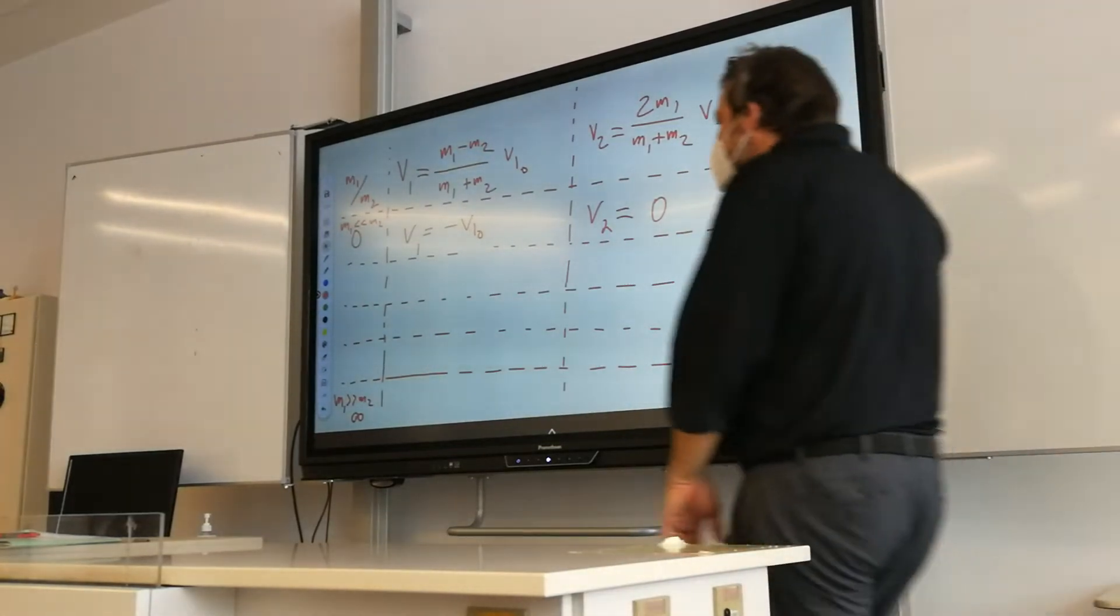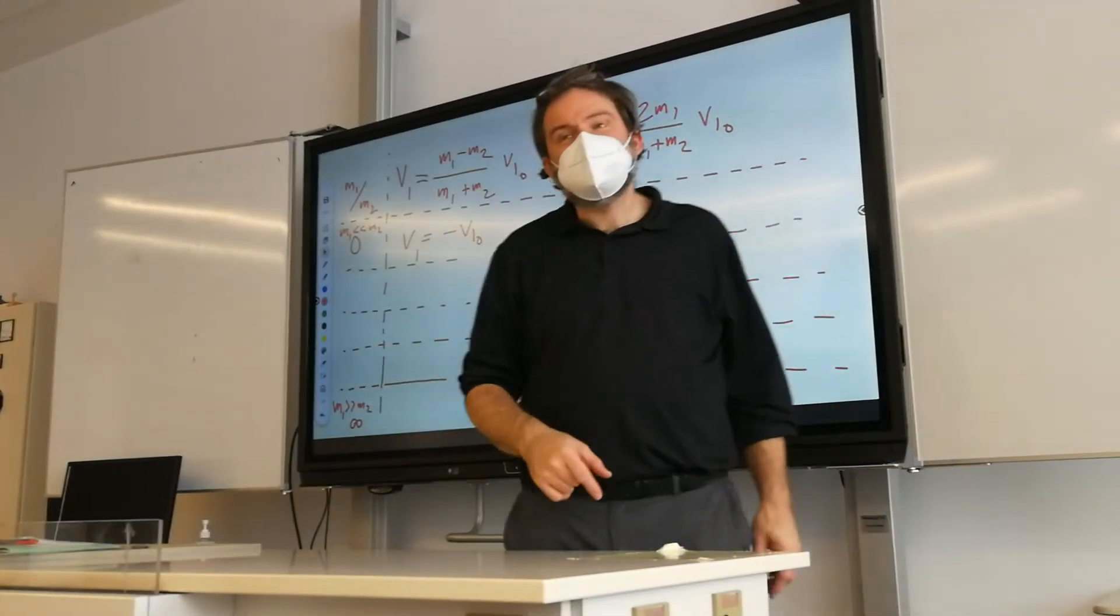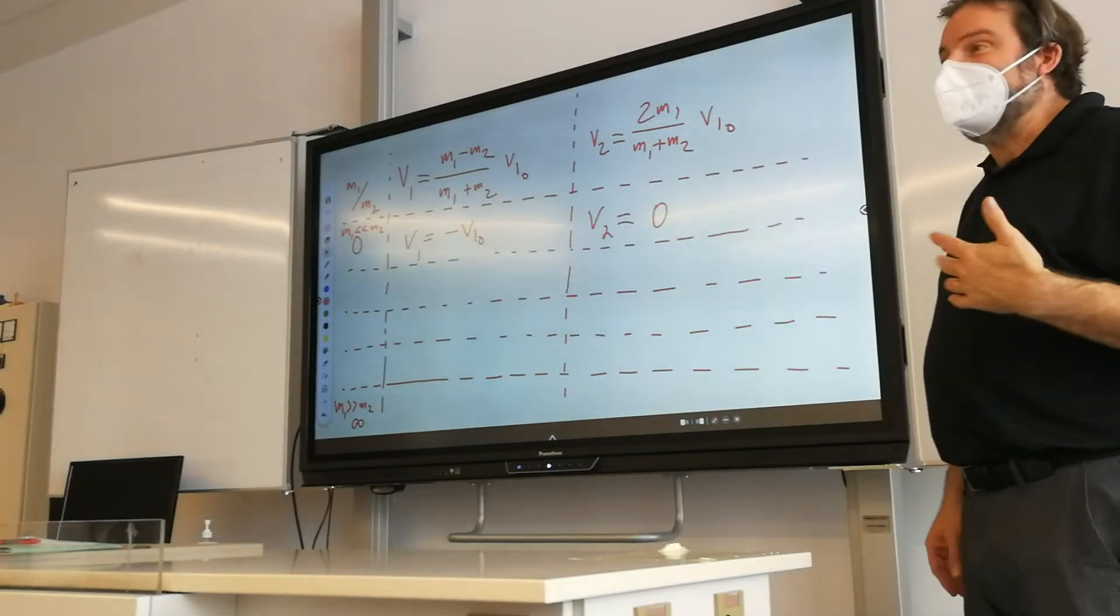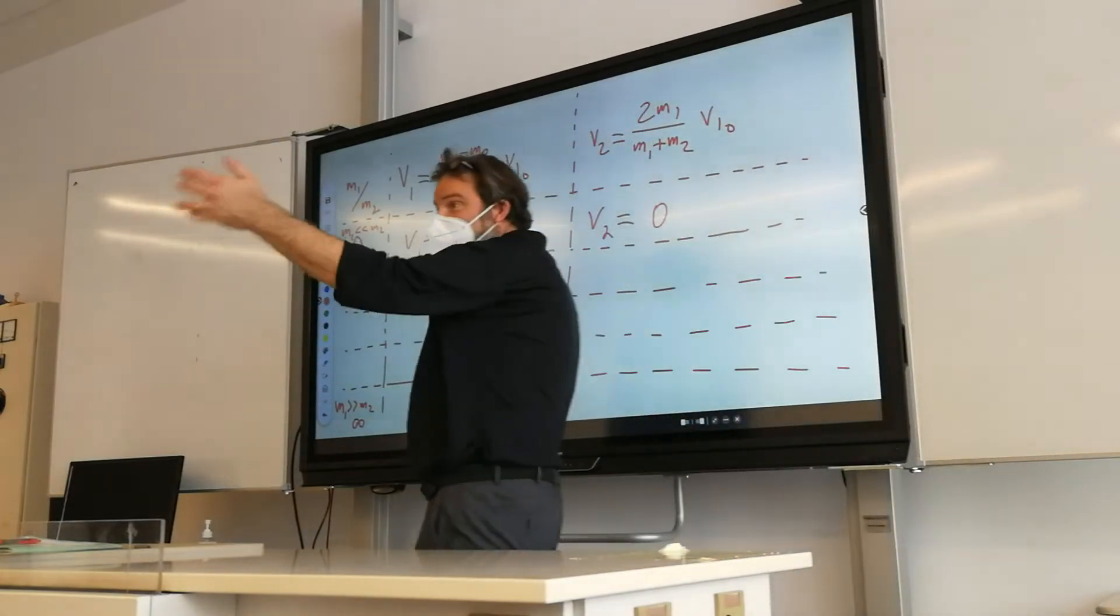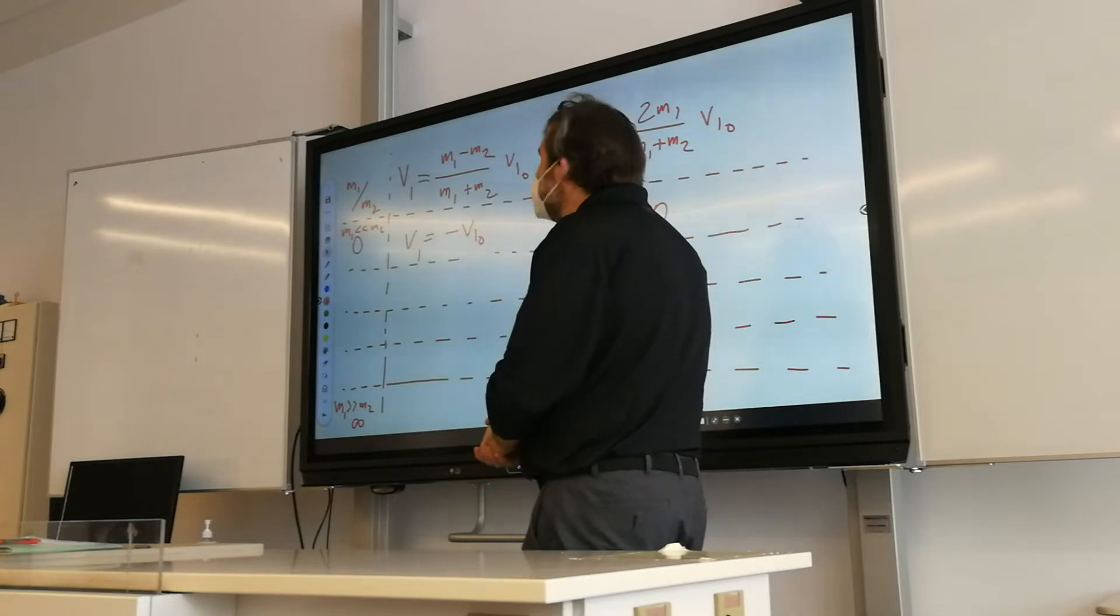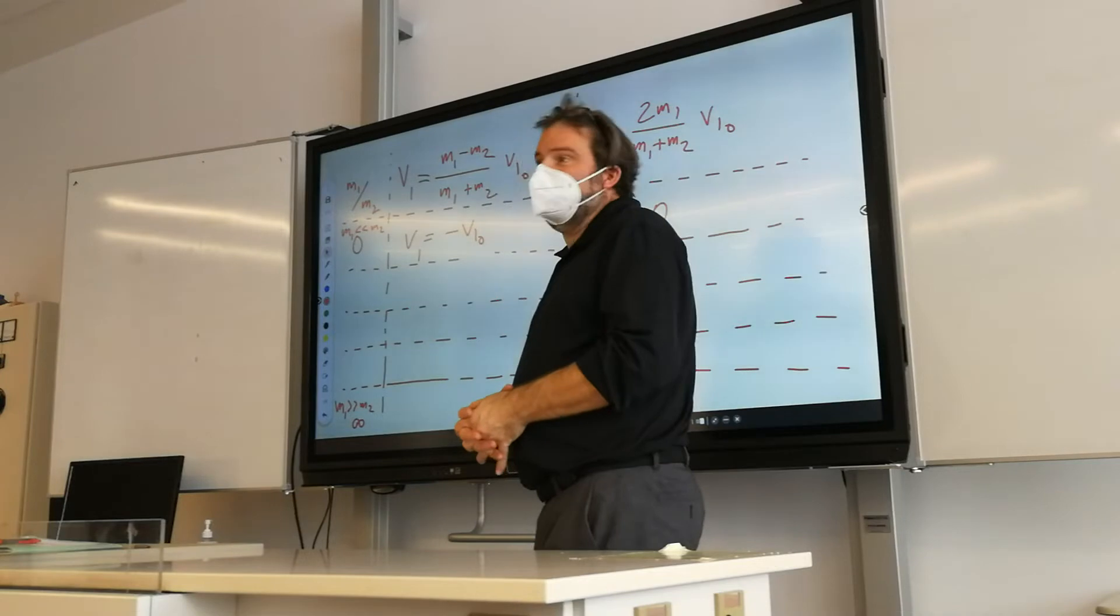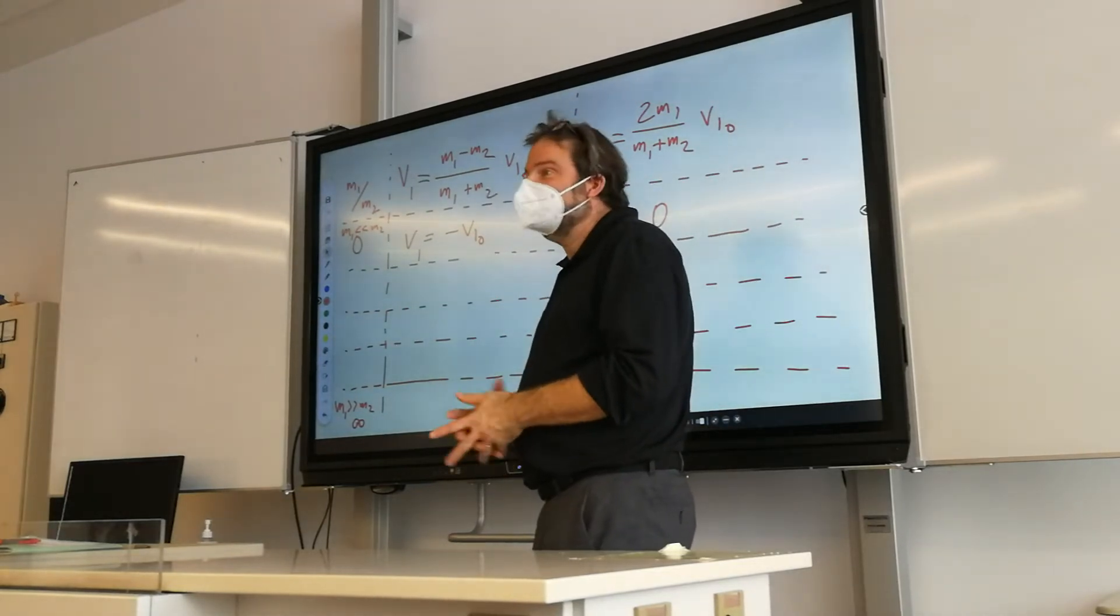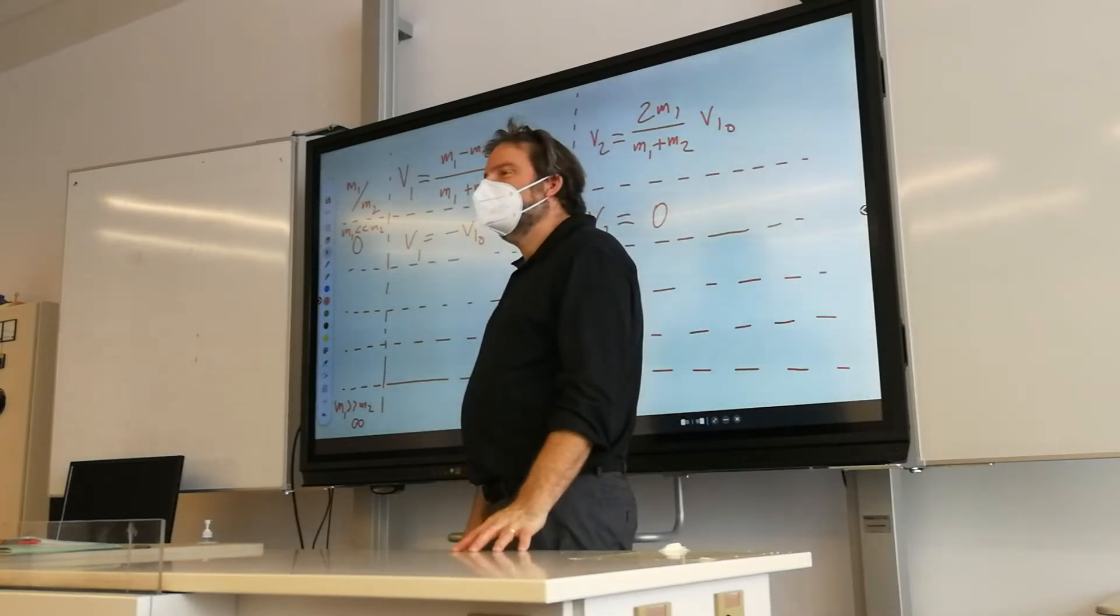So we have here the extreme case. We said M1 is much greater than M2. We're now going to take a very massive object and move it into a relatively low mass object. So let's take V1. V1 would just be V1,0. It would be V1,0, which is not surprising. So basically, you have a Mack truck hit a tennis ball. The Mack truck is like, what happened? Nothing, right?